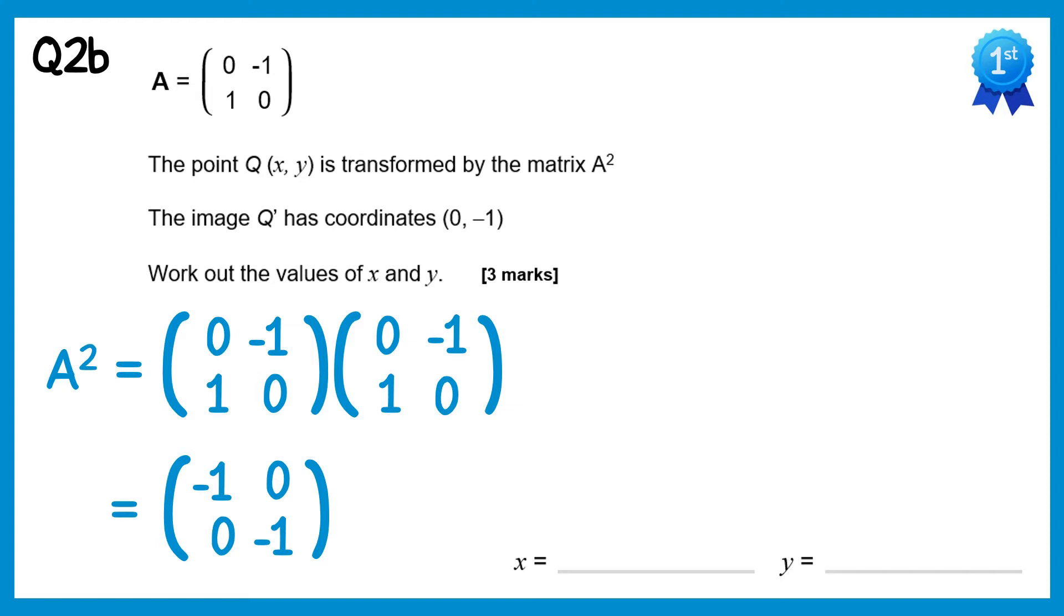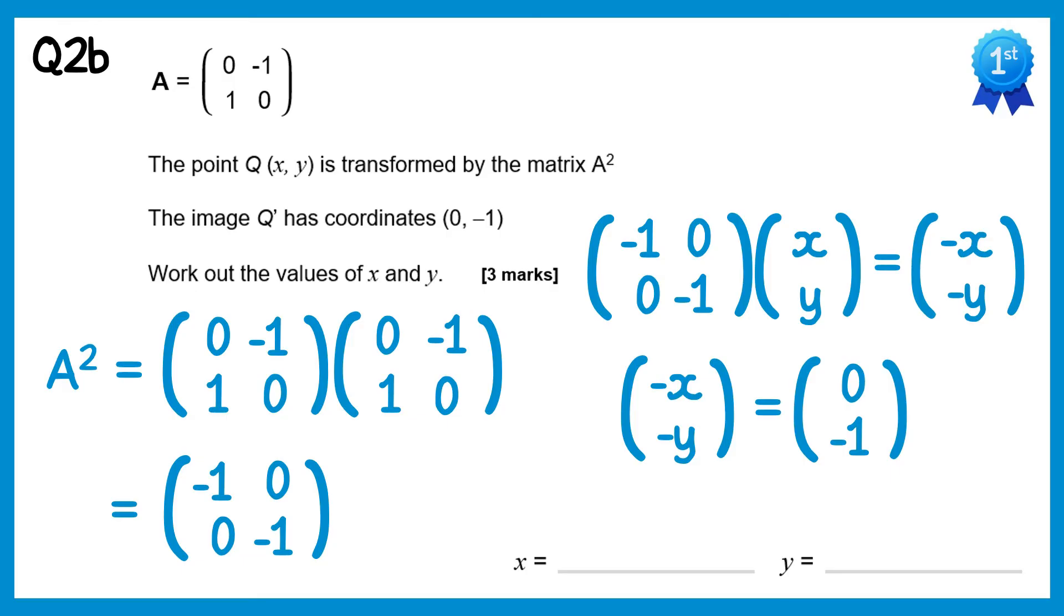The point we're transforming is point Q, but we haven't been given the coordinates of that. We've just got (x,y), but we do have the coordinates of the image. So if we multiply A squared by the points (x,y), and see what we get. We do (-1,0) with (x,y), negative 1 times x is -x, so we end up with negative x. And then (0,-1) with (x,y), 0 times x is 0, and negative 1 times y is negative y. So if we were to transform the coordinate (x,y), it would come out as (-x,-y). But we know the result of this is (0,-1), so we have -x = 0, in which case x must be 0, and -y = -1, in which case y must be 1.